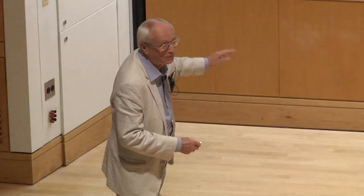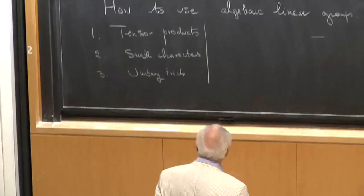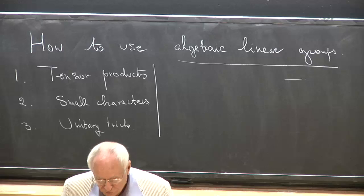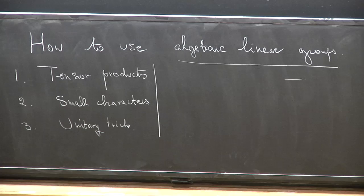The idea of the lecture is to explain how you use, in simple cases, algebraic linear groups for questions on groups, even on group representations, but where the group is arbitrary. The type of group I have in mind, which is far from arbitrary, is a Galois group — an infinite Galois group. And the linear representations are l-adic representations.